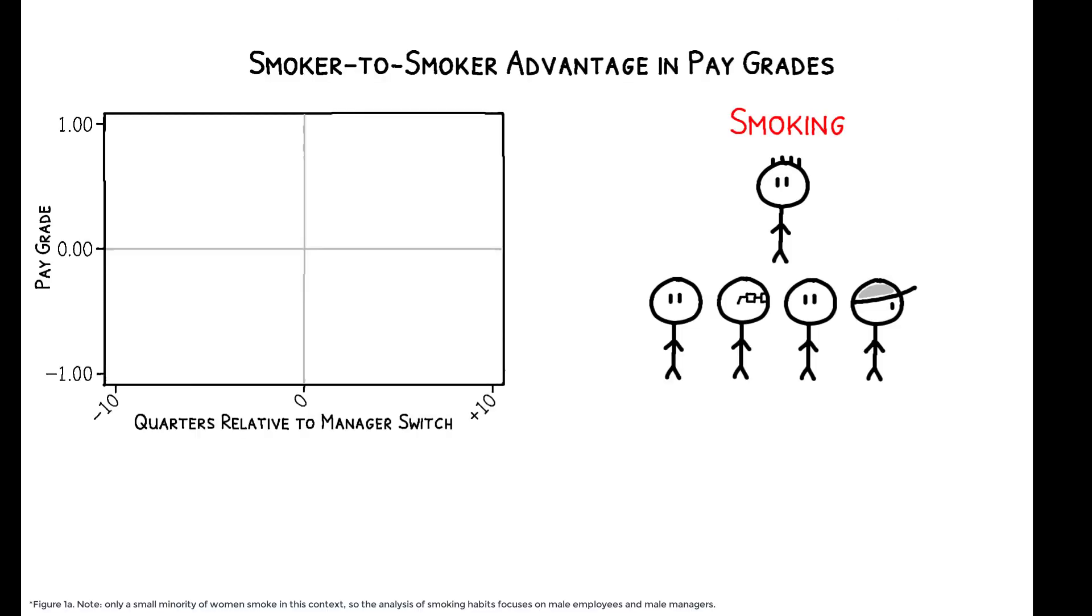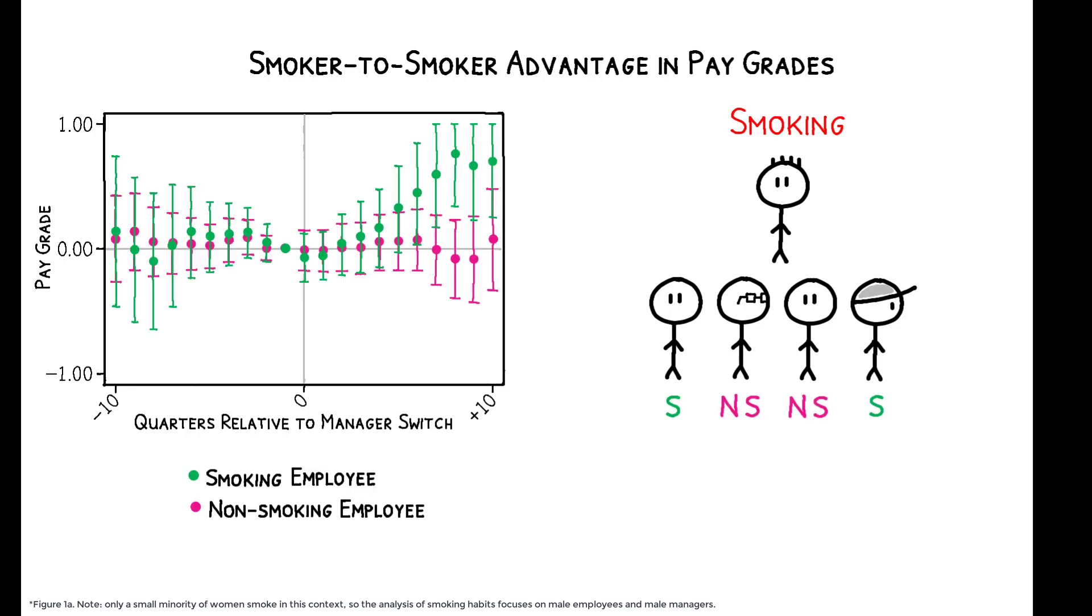This figure shows the results separately for smoking and non-smoking employees. Prior to the transitions, both types have similar career trajectories. This is consistent with the idea that manager assignments are as good as random. But after the transitions, there is a clear divergence.